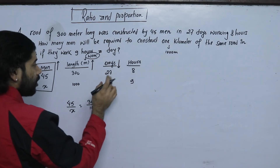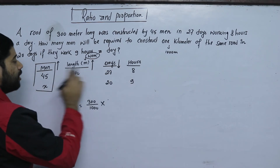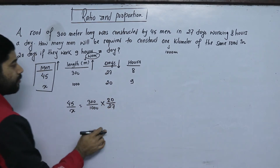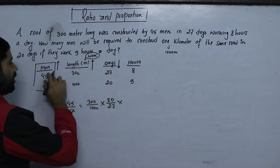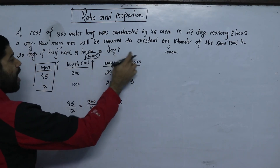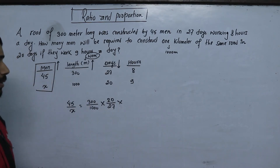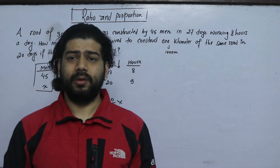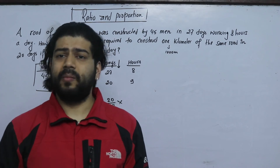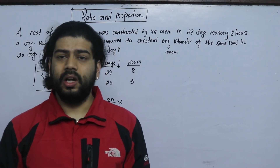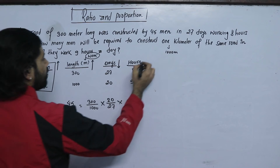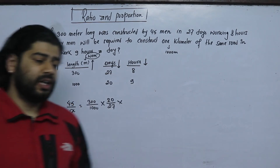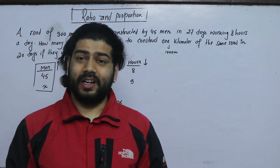In the previous example, you can see the inverse proportion. It is 27 days. For the first time, you are going to take the number of hours — the days and hours. You can see the different number of days. In some cases, the number of hours will be shorter, so we apply inverse proportion.